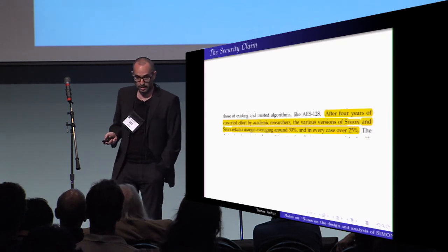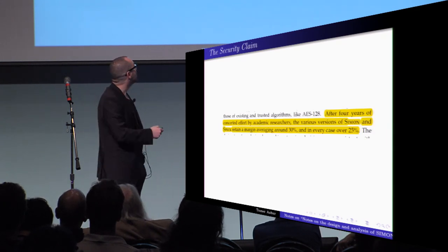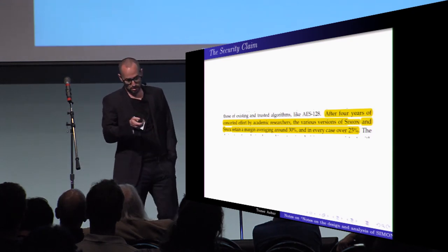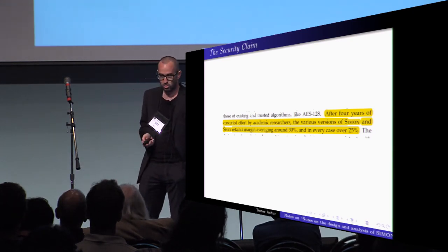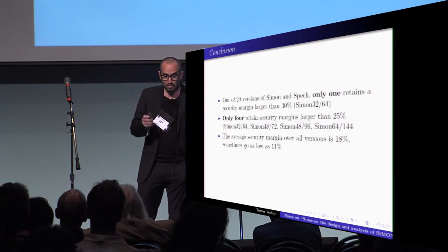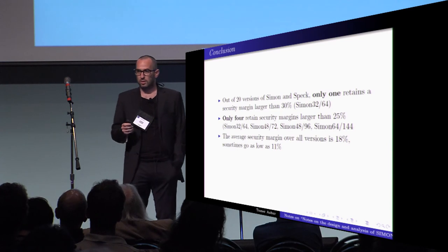Going back to the security claim, mind you, they said that in every case it's over 25%. These were three cases where they don't retain at least 25%. And in fact, out of 20 versions of Simon and Spec,